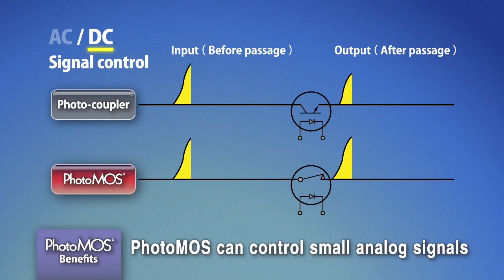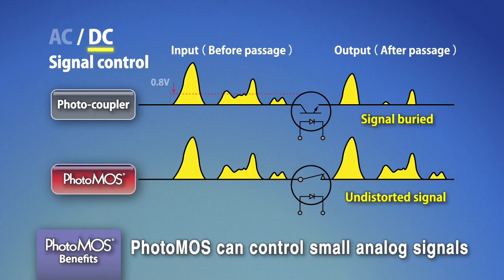The situation is similar for photocouplers controlling DC signals. With PhotoMOS, controlled by MOSFET, the notion of ON voltage is irrelevant. Even with a small voltage signal, even if it is an analog signal, MOSFET can control signals without distortion.